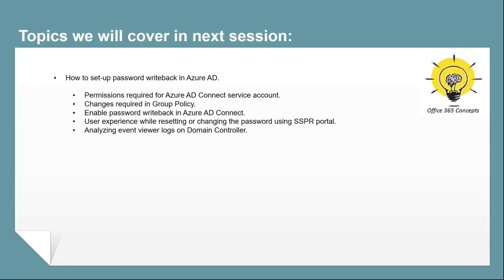In the next video, we will demonstrate how to configure and set up the password writeback feature in Azure Active Directory — what permissions to assign on the on-premise Azure AD Connect service account, what changes are required in group policies in on-premise Active Directory, what changes are needed in Azure AD Connect, the user experience of resetting a password, and how an administrator can verify if the password reset or change was successful.